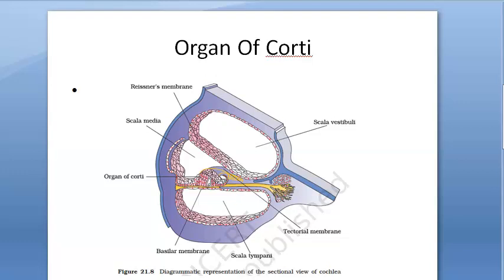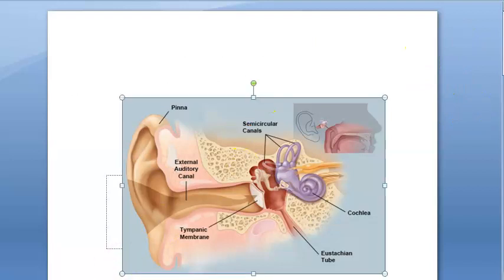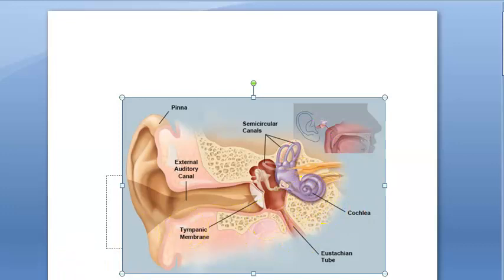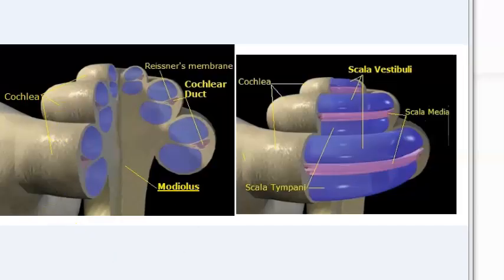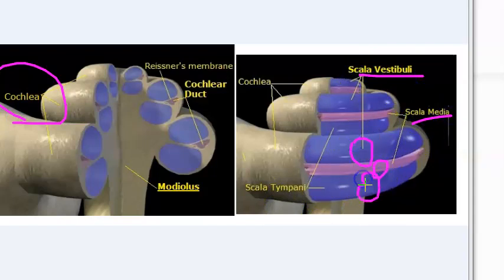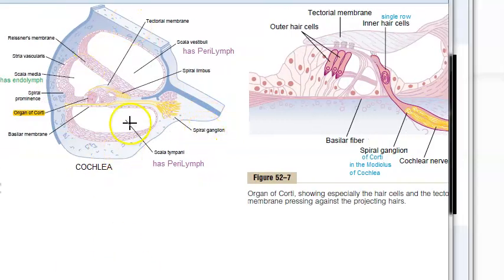Let us look at the Organ of Corti. Where exactly will you see it in the ear? In the inner ear, you have the cochlea — a spiral structure. When you see the cross-section of the cochlea, cut open, you can see how it is inside. You have the scala vestibuli, scala media, and scala tympani — three layers.